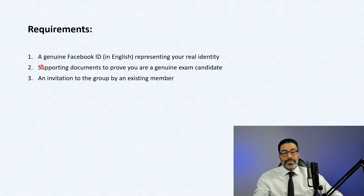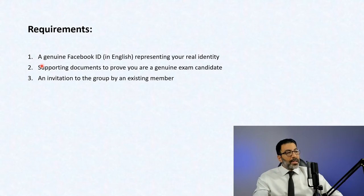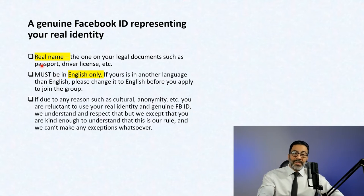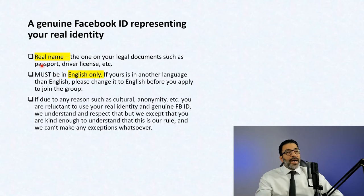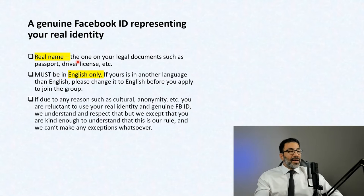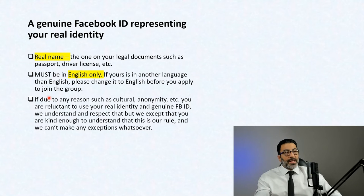In every private Facebook group you need an invitation by an existing member to get in. Let's break these three requirements down one by one. The first thing is a genuine Facebook ID representing your real identity. It should include your real name — the one you use on your legal documents, like your passport or driver's license — whatever the legal name you're known by officially. And this ID must be in English only; please don't use other letters than English.